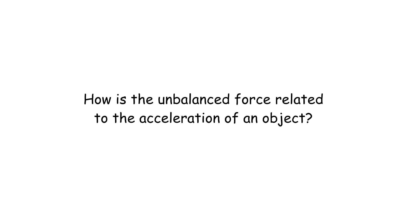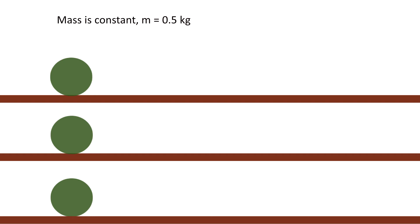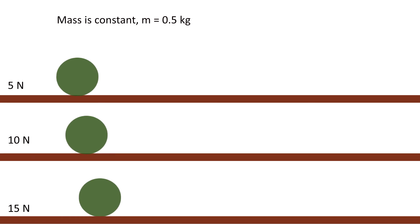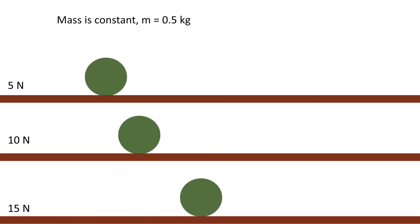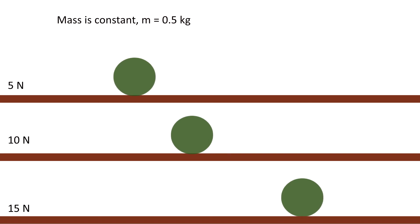How is the unbalanced force related to the acceleration of the object? Let's consider this ball having a mass of 0.5 kg. If you apply different amounts of force such as 5 N, 10 N, and 15 N, which of these three forces makes the ball accelerate faster? Of course, the 15 N will make the ball accelerate fastest.